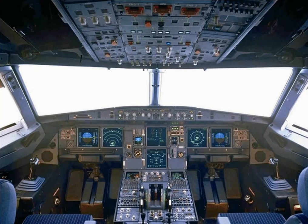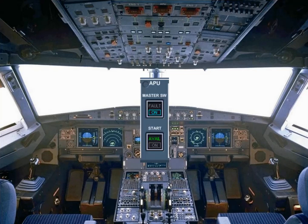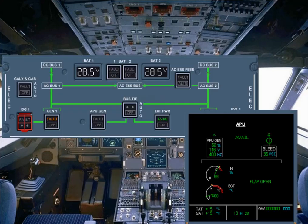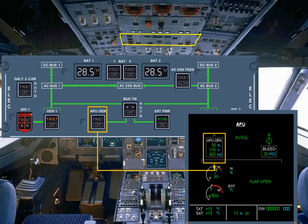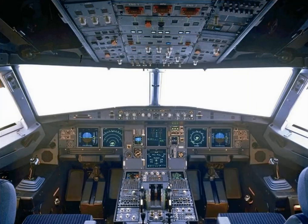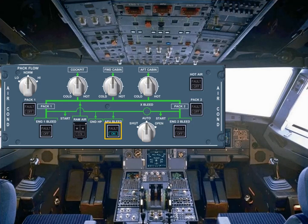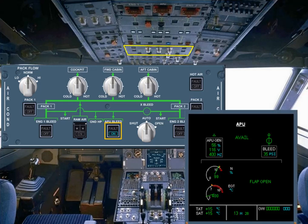Let's see the different controls that the pilots use to operate the APU. These controls are installed in various places on the overhead panel. The APU master switch and the start push button are installed on the APU control panel. The APU gen push button switch is located on the electrical panel and is used to control the APU generator. The APU bleed push button switch is located on the air conditioning panel and controls the APU bleed system.